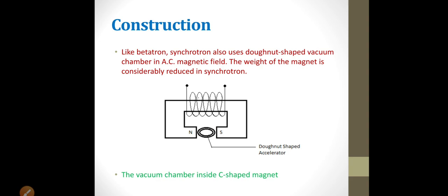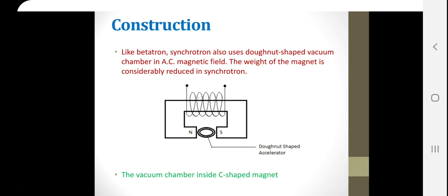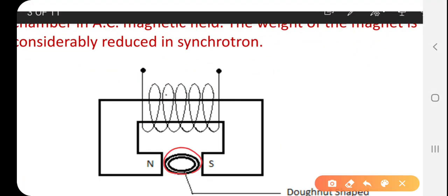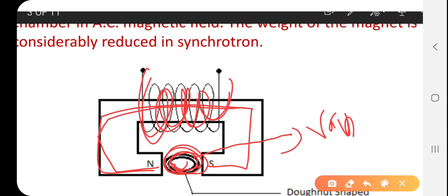The synchrotron uses the C-shaped magnet. This is a C-shaped magnet, and it is associated with alternating current. Synchrotron also uses a doughnut-shaped vacuum chamber — this is the doughnut-shaped vacuum chamber — in an alternating current magnetic field. This is the setup of the synchrotron.